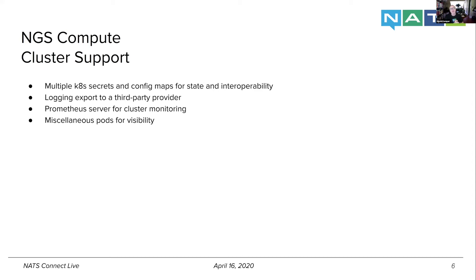We also install Prometheus server in-cluster for monitoring the cluster itself — pulling NATS metrics data as well as Kubernetes infrastructure metrics. In the pod we deploy for the NATS server, we have the Prometheus sidecar as well. We can then point Grafana onto those various Prometheus instances for global monitoring. We also have miscellaneous pods for visibility — for ops, we tend not to want to go directly into running NATS server pods, so we have a daemon set of pods for each node so we can kubectl exec onto it if there are any issues.